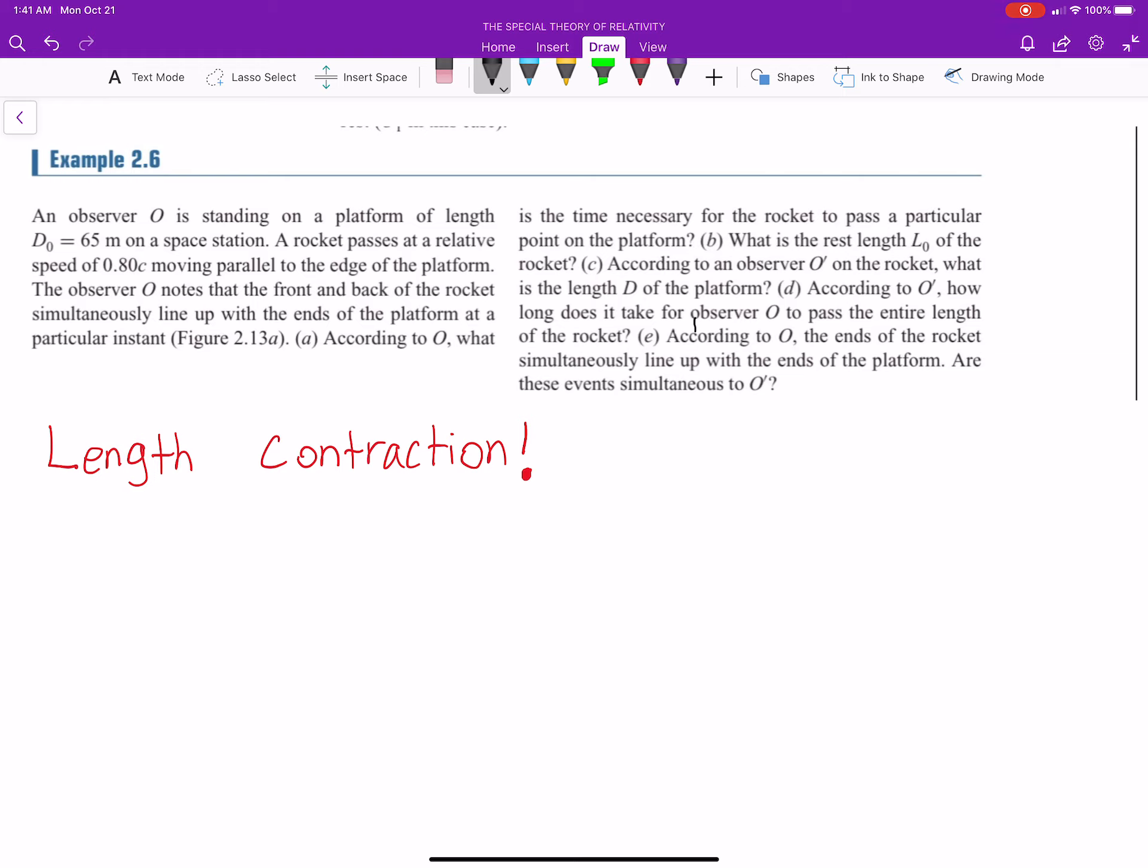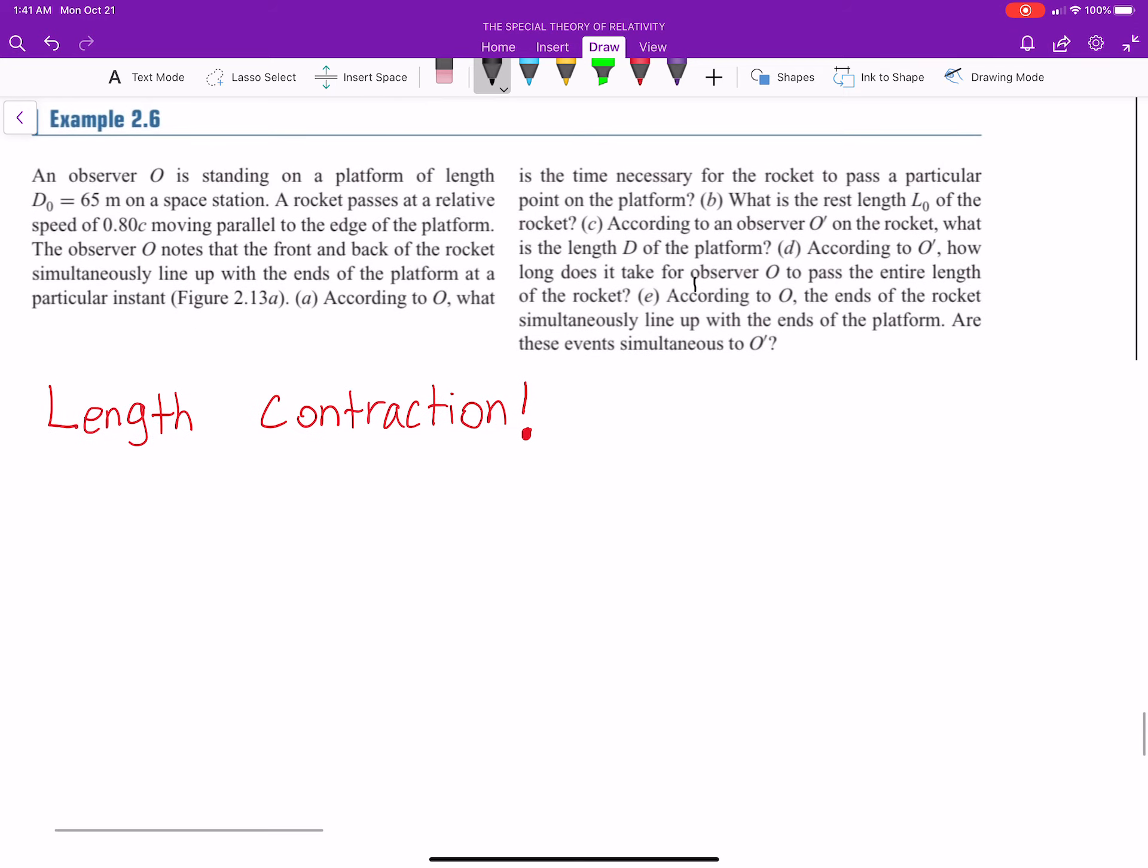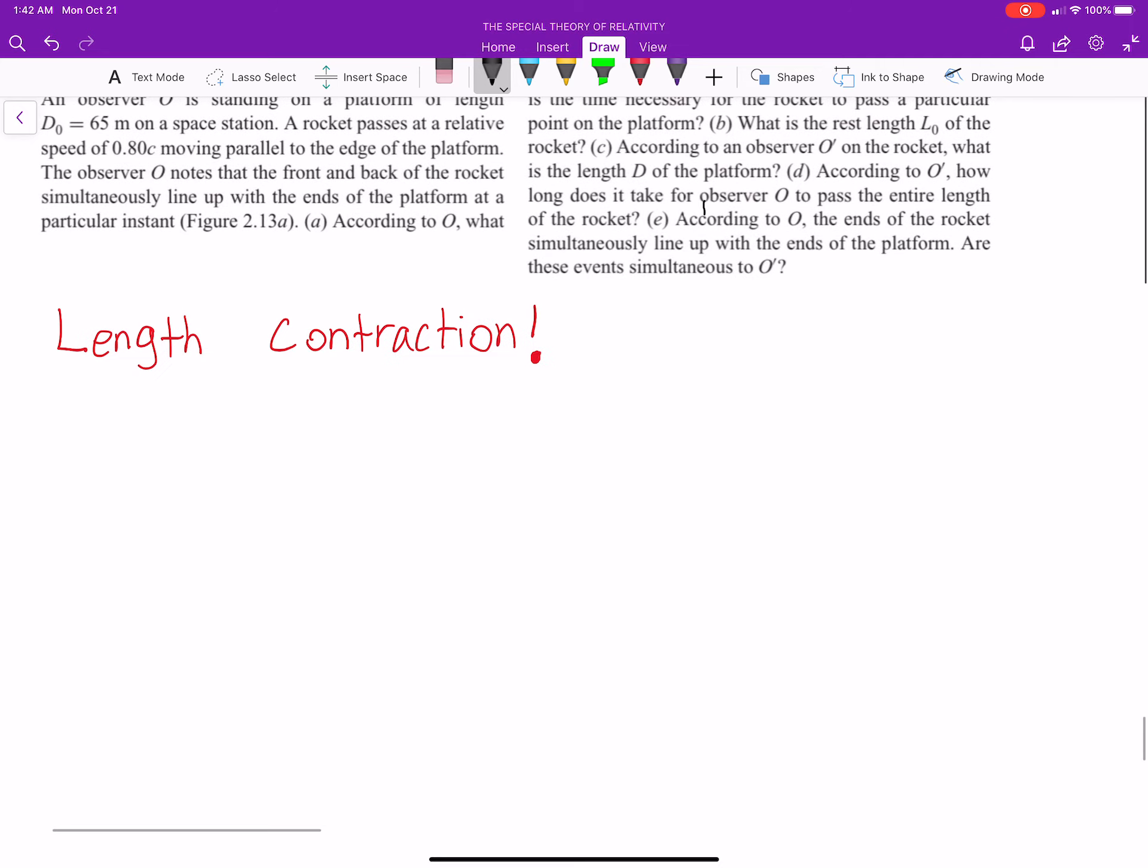So it says an Observer O is standing on a platform of length d-naught equal to 65 meters on a space station. A rocket passes at a relative speed of 80% the speed of light, moving parallel to the edge of the platform. The Observer O notes that the front and back of the rocket line up simultaneously with the end of the platform at a particular instant. According to O, what is the necessary time for the rocket to pass a particular point on the platform?